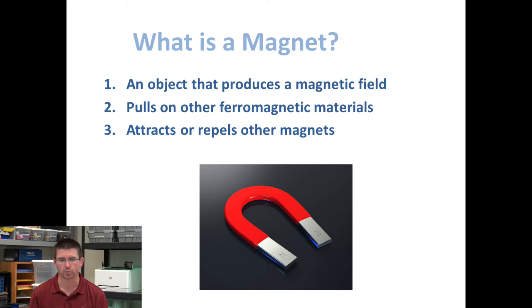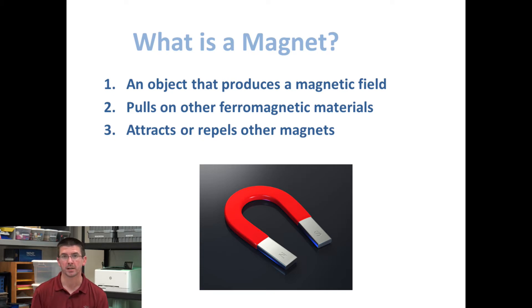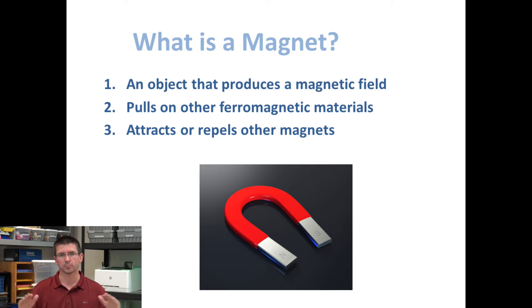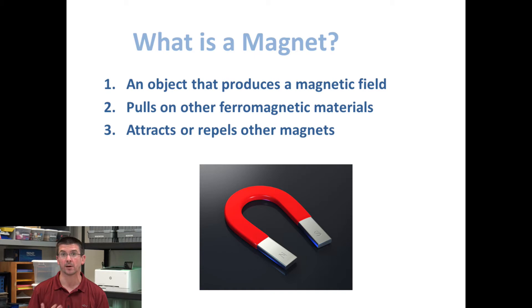The first characteristic that every magnet has is that every magnet must produce a magnetic field. That's basically invisible lines of force that surround the magnet that are able to allow it to move certain objects.